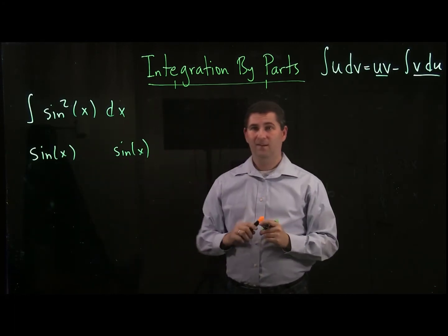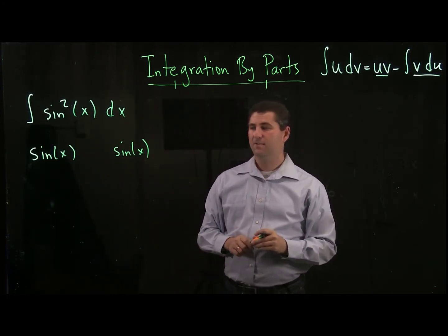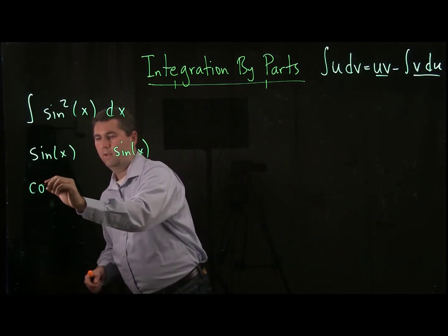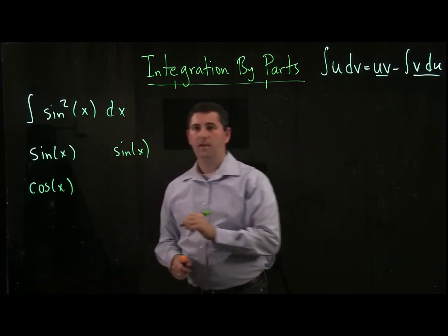So we break it up by making my u sine of x and my dv sine of x dx. Of course, I only write the sine of x and the sine of x. On the left, I take a derivative.